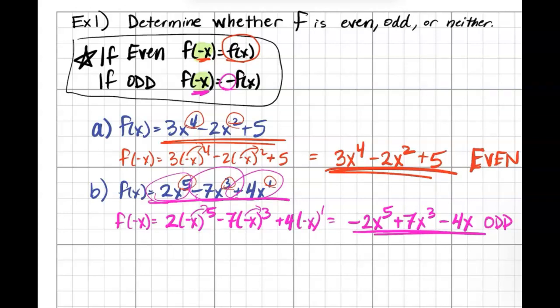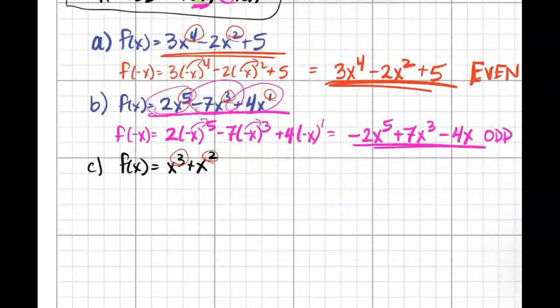Third one we're going to check, part C. We're going to have function f(x) = x^3 + x^2. Here I'm seeing a combination of exponents, an odd exponent and an even exponent, so I'm thinking it's going to be neither, but I'm going to check by plugging in negative x.